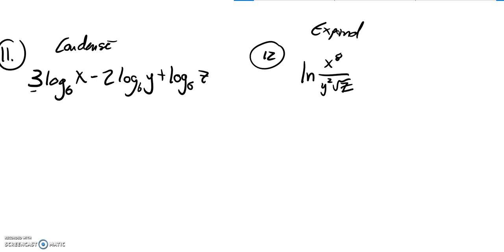First thing I'm going to deal with is these multipliers. Those are exponents, so those will pop up. So this becomes log base 6 of x to the third, minus log base 6 of y squared. And then that's just a 1, so log base 6 of z.